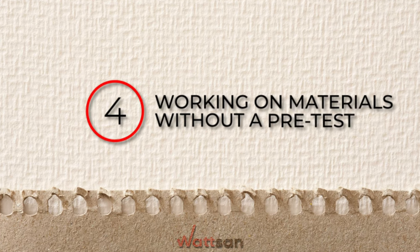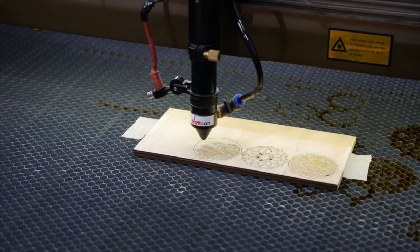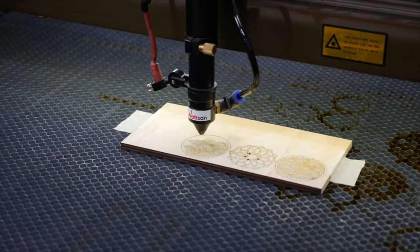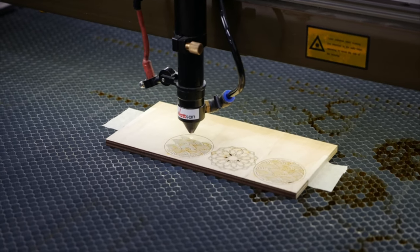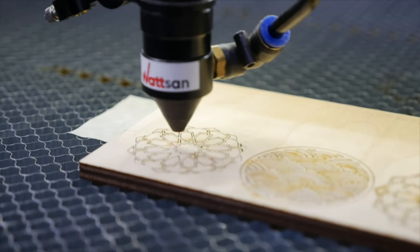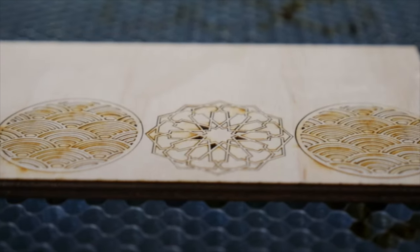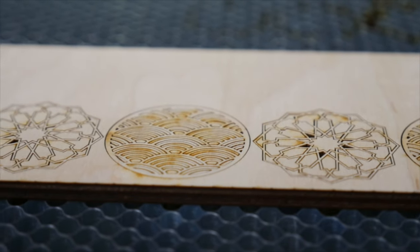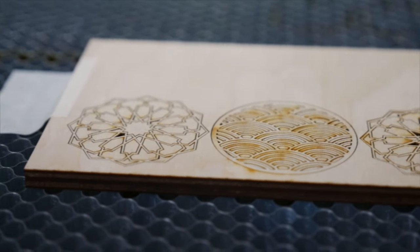4. Working on materials without a pretest. You have to allow for sample and reject material, which is about 10 to 15 percent of the total volume. There might be knots in plywood, or an operator's mistake when the material is accidentally shifted. In both cases, the product will be ruined.